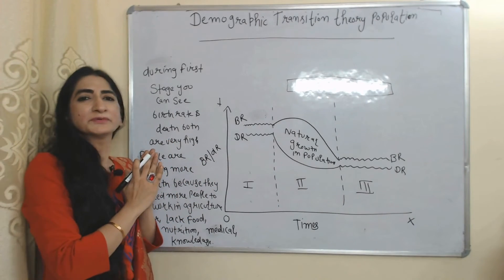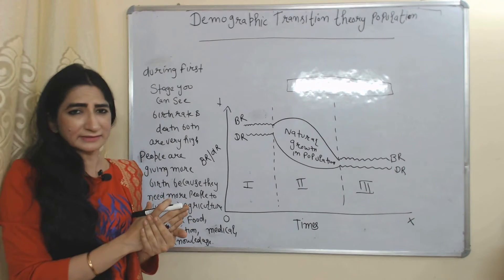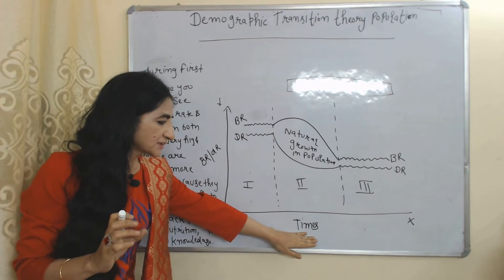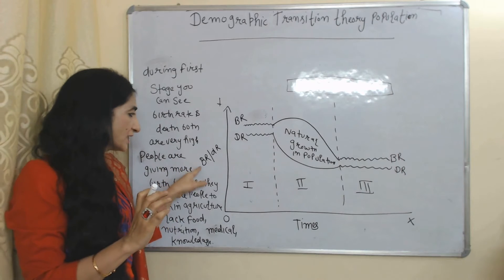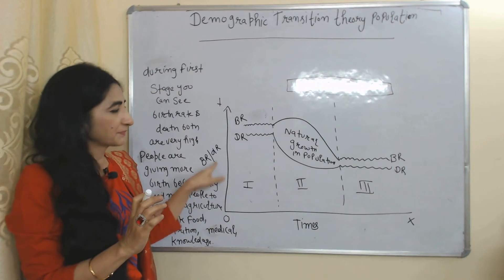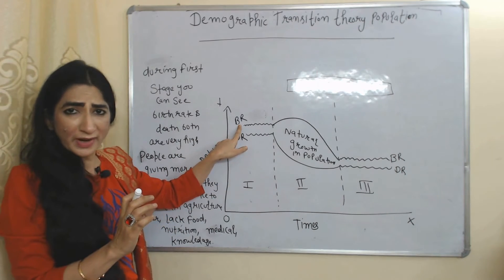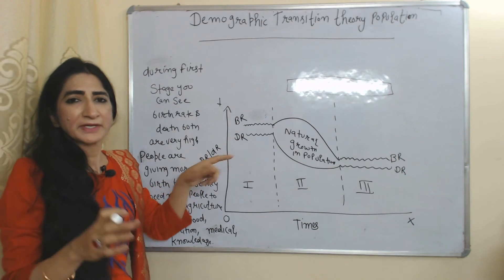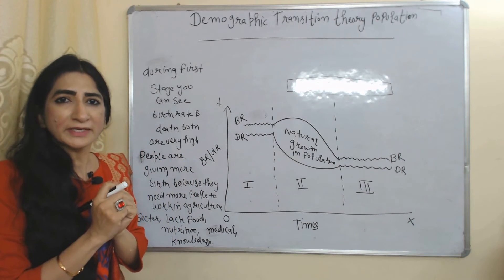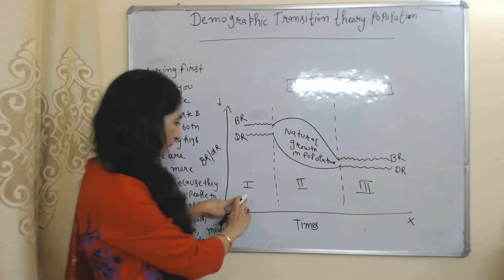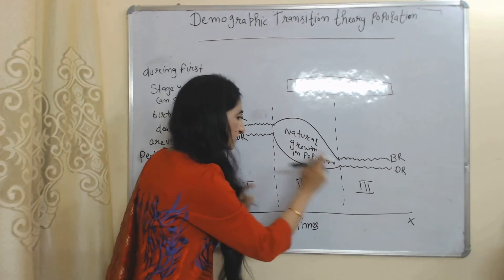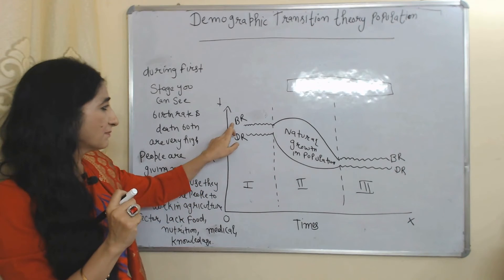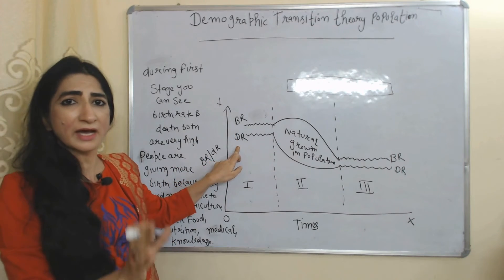With the help of this diagram we will understand this theory. On the x-axis we have time period and on the y-axis we have birth rate and death rate. The BR curve represents birth rate and the DR curve represents death rate. This theory is mainly divided into three stages: first, second, and third. During the first stage, birth rate and death rate are both very high.